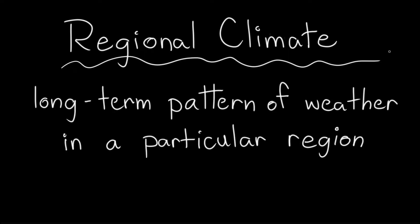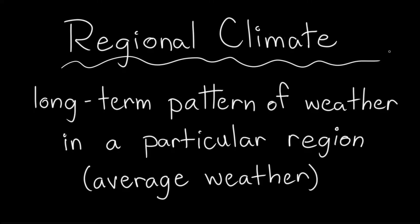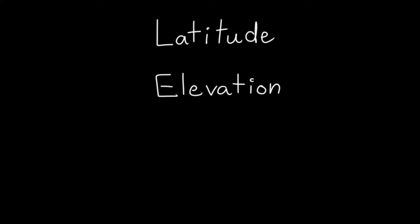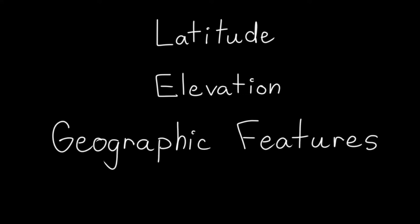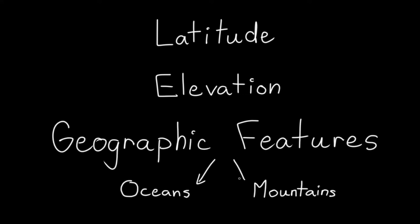Climate is the long-term pattern of weather in a particular region. You can think of it as the average weather. A region's climate depends on many factors, including its latitude, elevation, and surrounding geographic features, such as oceans or mountains.